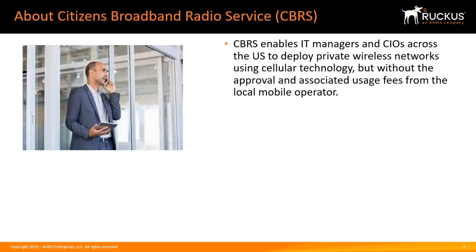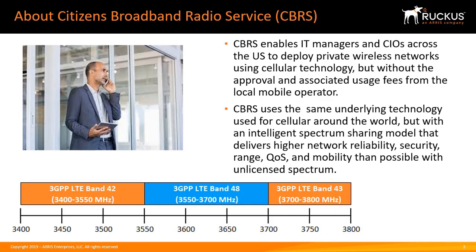Citizens Broadband Radio Service, called CBRS for short, enables IT managers and CIOs across the U.S. to deploy private wireless networks using cellular technology, but without the approval and associated usage fees from the local mobile operator. CBRS uses the same underlying technology used for cellular around the world, but with an intelligent spectrum sharing model that delivers higher network reliability, security, range, QoS, and mobility than possible with unlicensed spectrum.